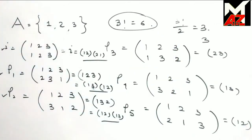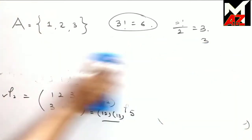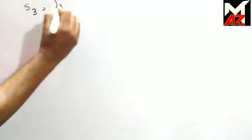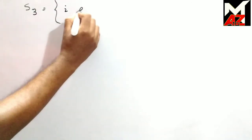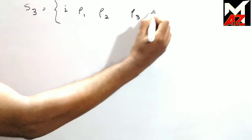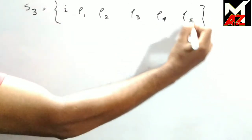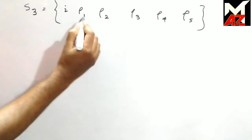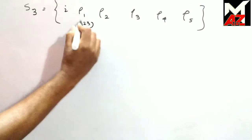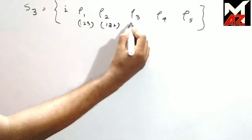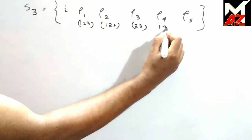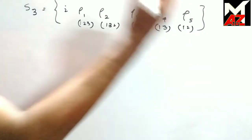Now we write these permutations in a set called S3: {i, ρ1, ρ2, ρ3, ρ4, ρ5}. In cycle notation: i is i (or ρ0), ρ1 is (1 2 3), ρ2 is (1 3 2), ρ3 is (2 3), ρ4 is (1 3), and ρ5 is (1 2).